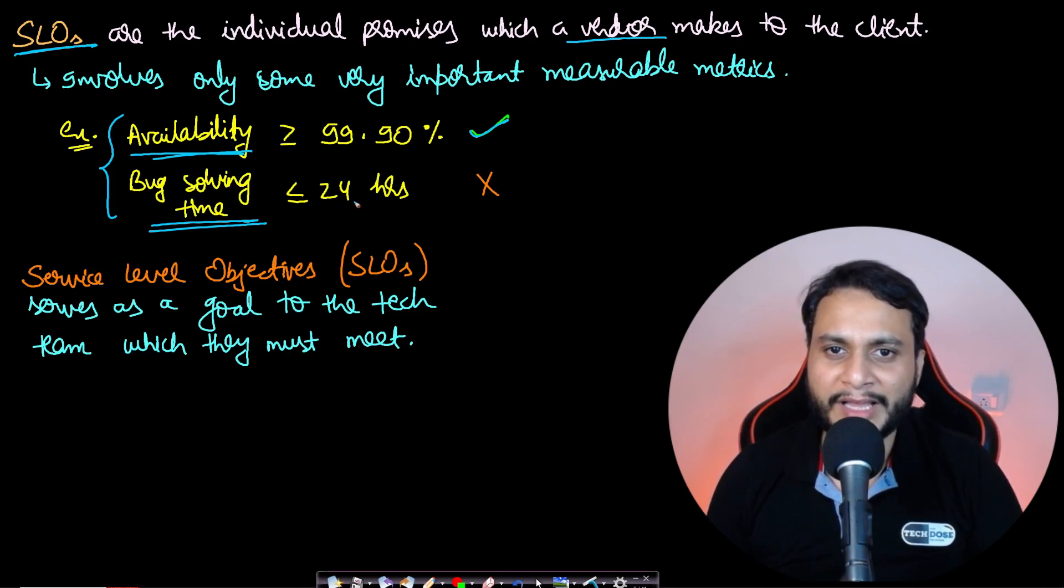Maybe the bug is dependent on somebody who is not available. The clients may not be available or answering on time or replying on time. Or maybe the engineers may not always be available, and therefore this will actually be excluded from the SLO. So the service level objectives serve as a goal to the tech team which they must meet.